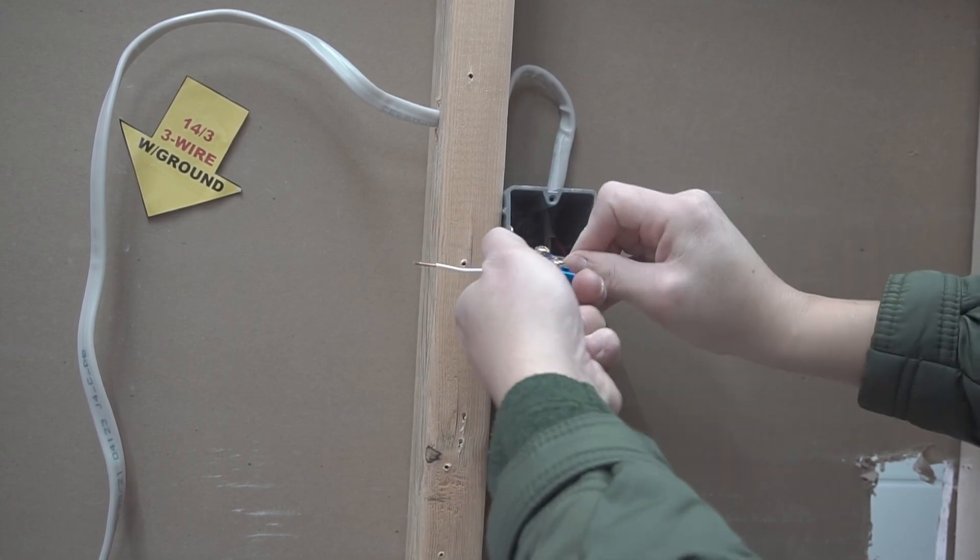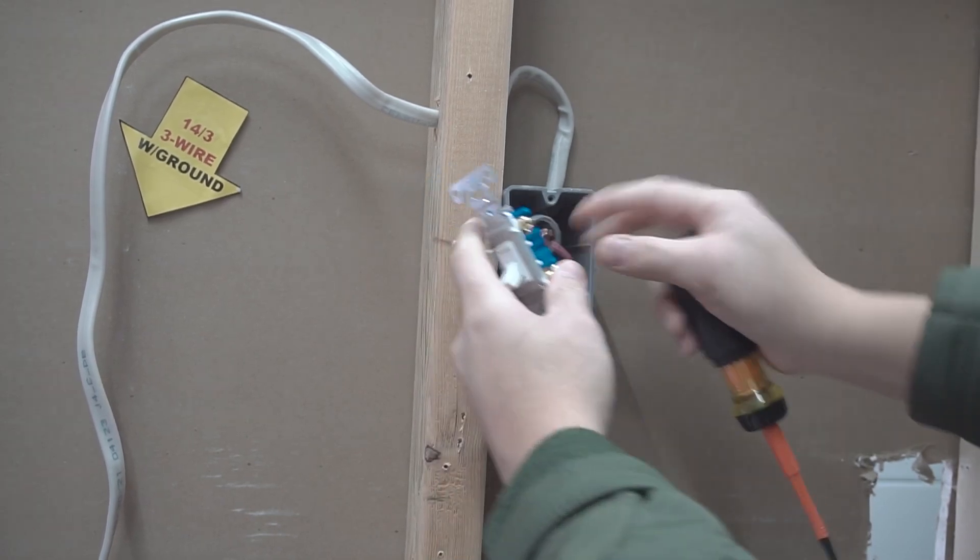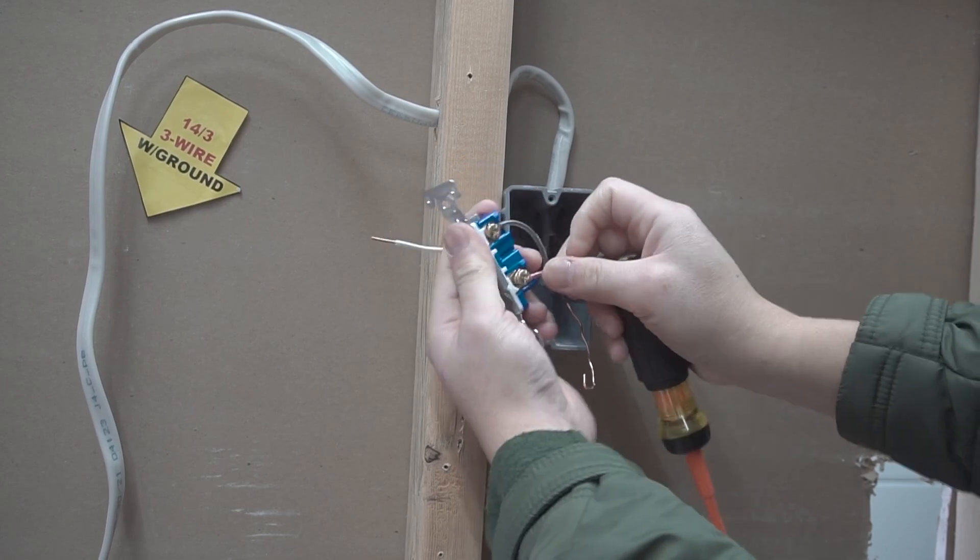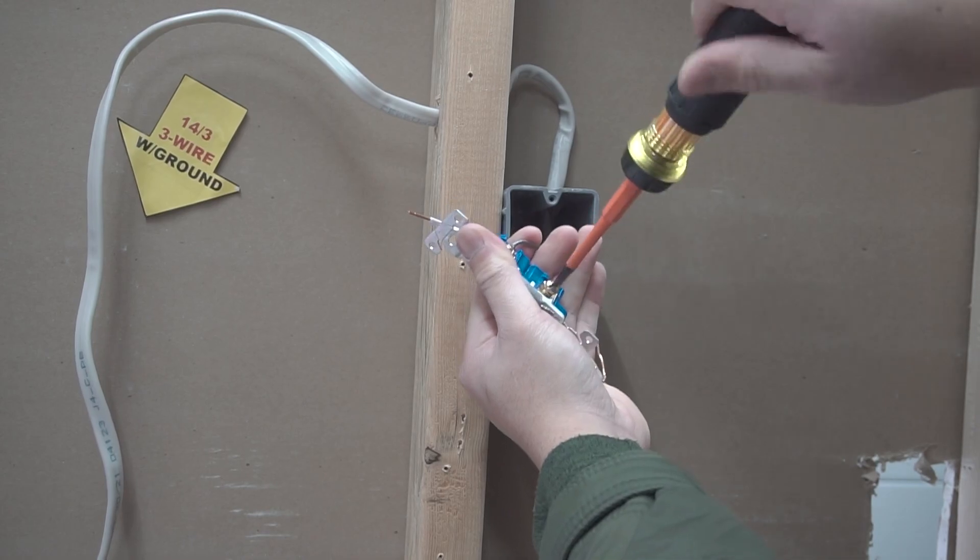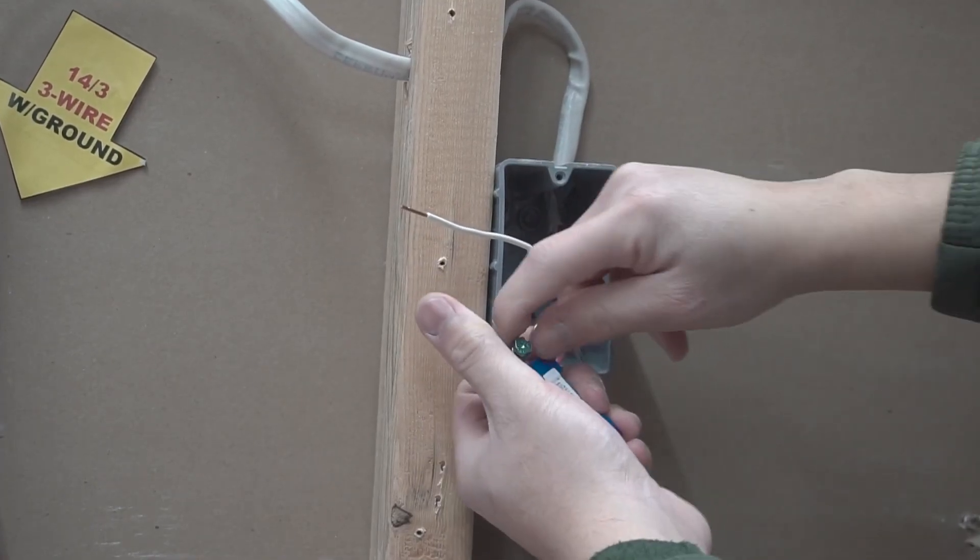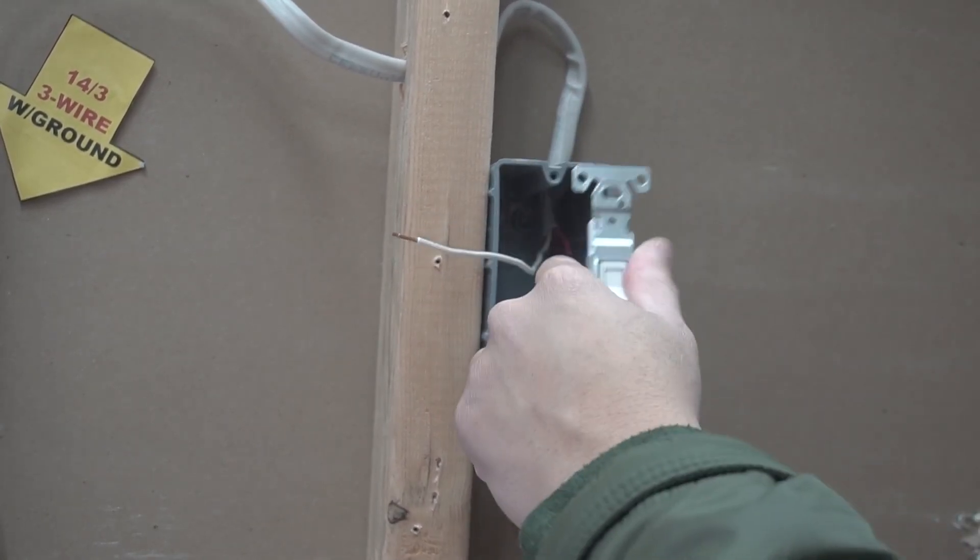Now take the red from the 14-3 and connect it to the bottom terminal. Clockwise, tighten that down. Take your ground wire and attach it clockwise onto the ground terminal. That's complete for that switch.